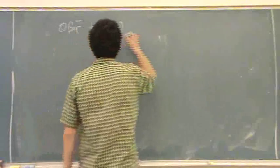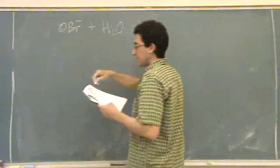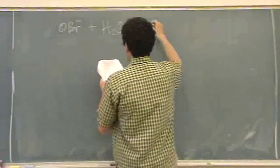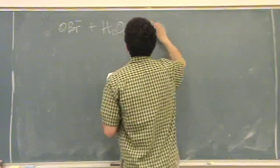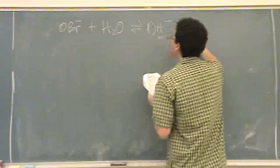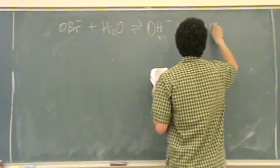This is a base. You also know because it tells you KB. If it tells you KB, it's got to be a base. It goes to hydroxide plus HOBr.